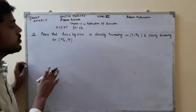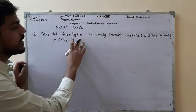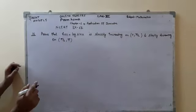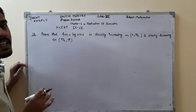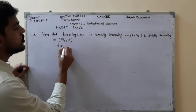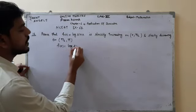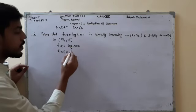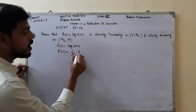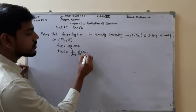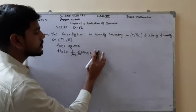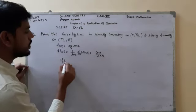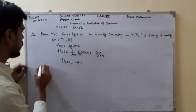Now we will look at question number 16: Prove that f(x) = log(sin x) is strictly increasing on (0, π/2) and strictly decreasing on (π/2, π). First of all, we find the slope. For f(x) = log(sin x), the derivative f'(x) equals 1/sin x multiplied by cos x (by the chain rule), which gives us cos x / sin x, meaning the slope equals cot x.